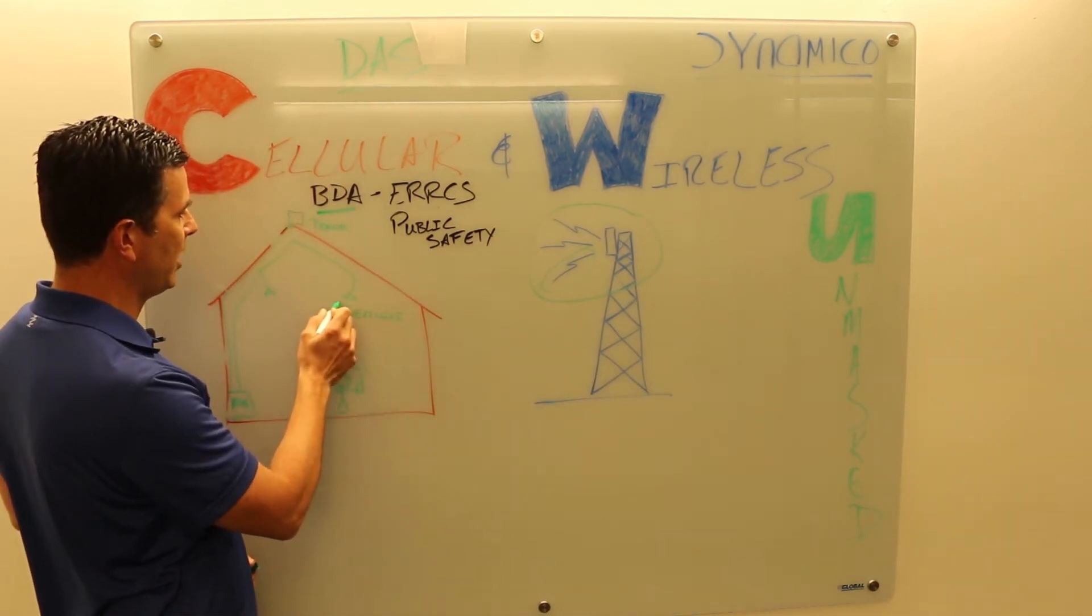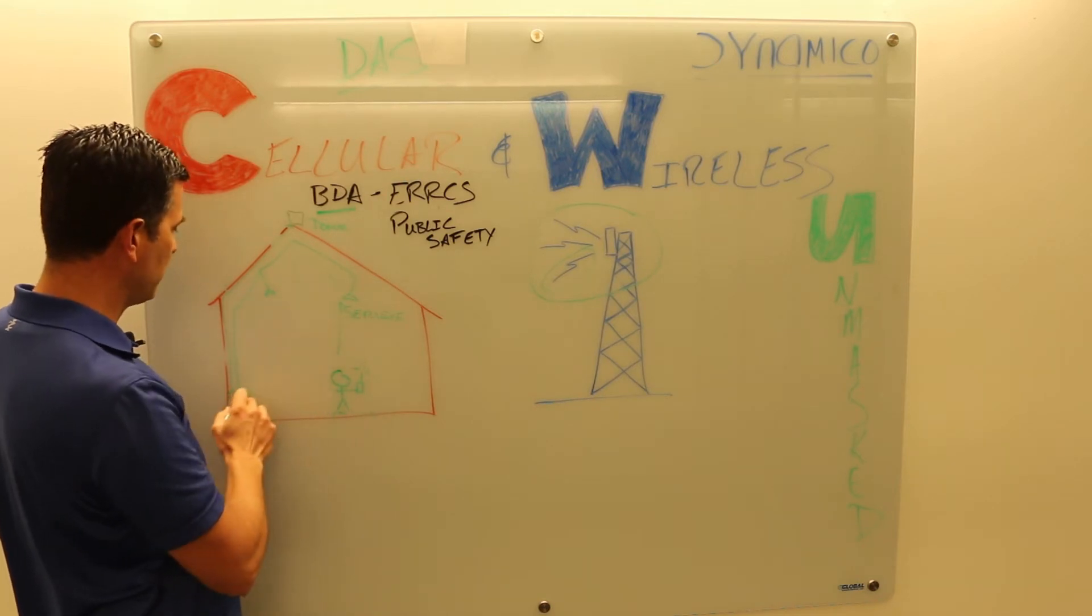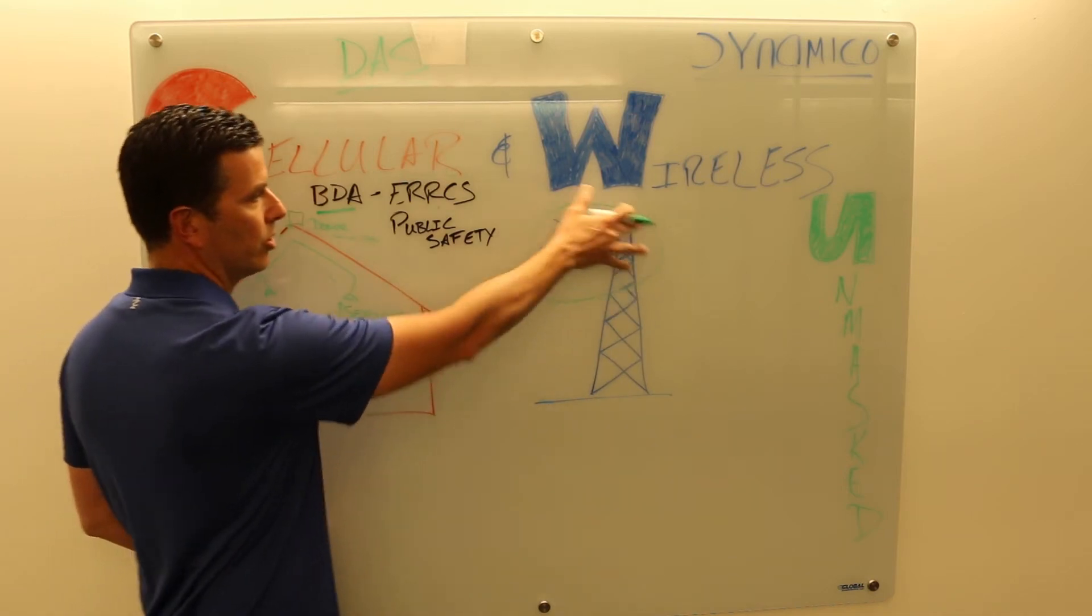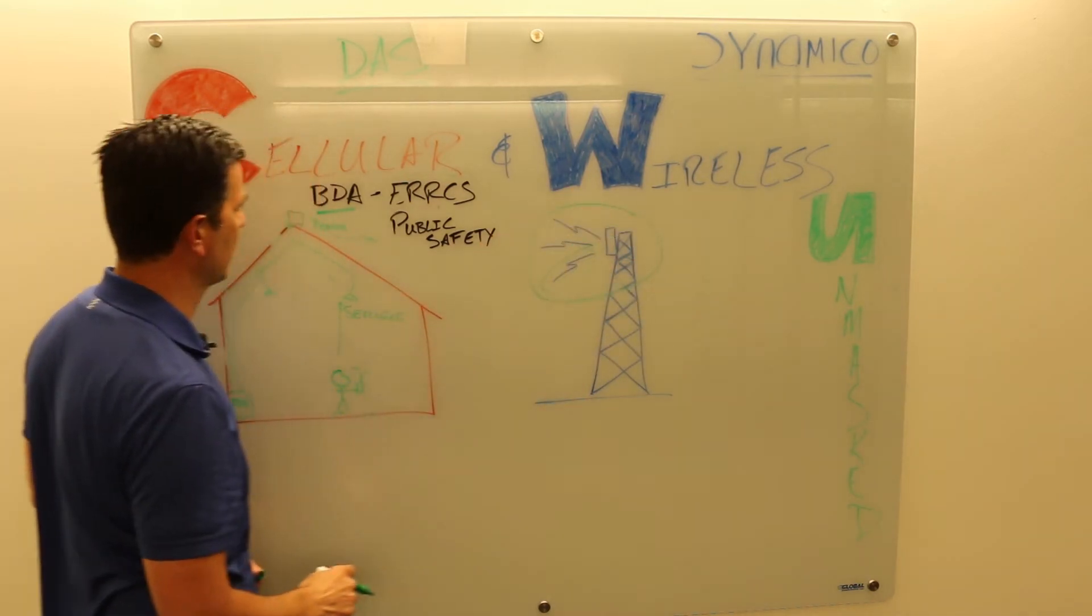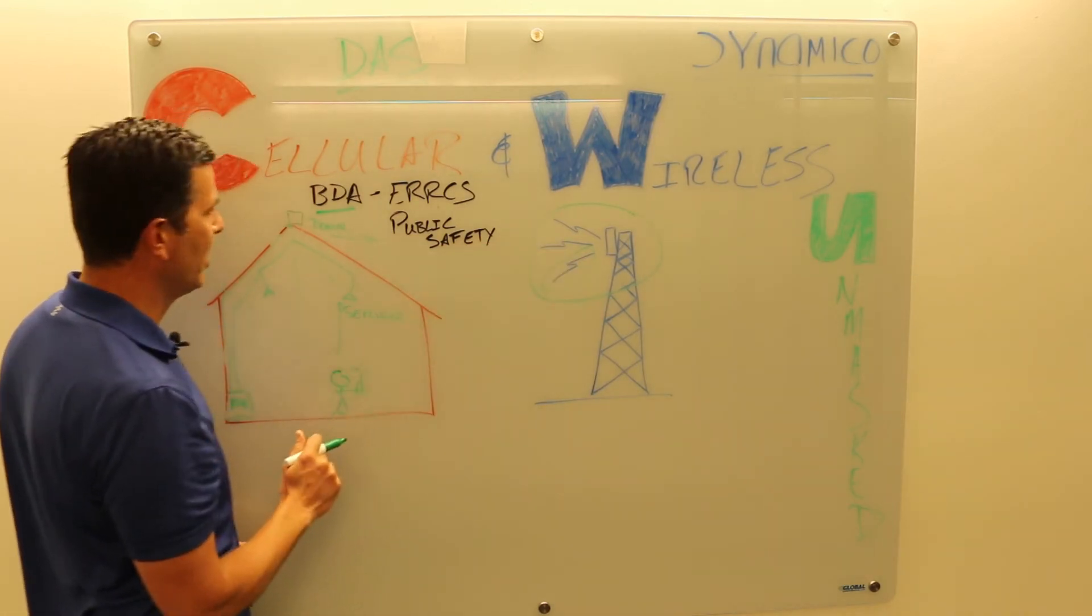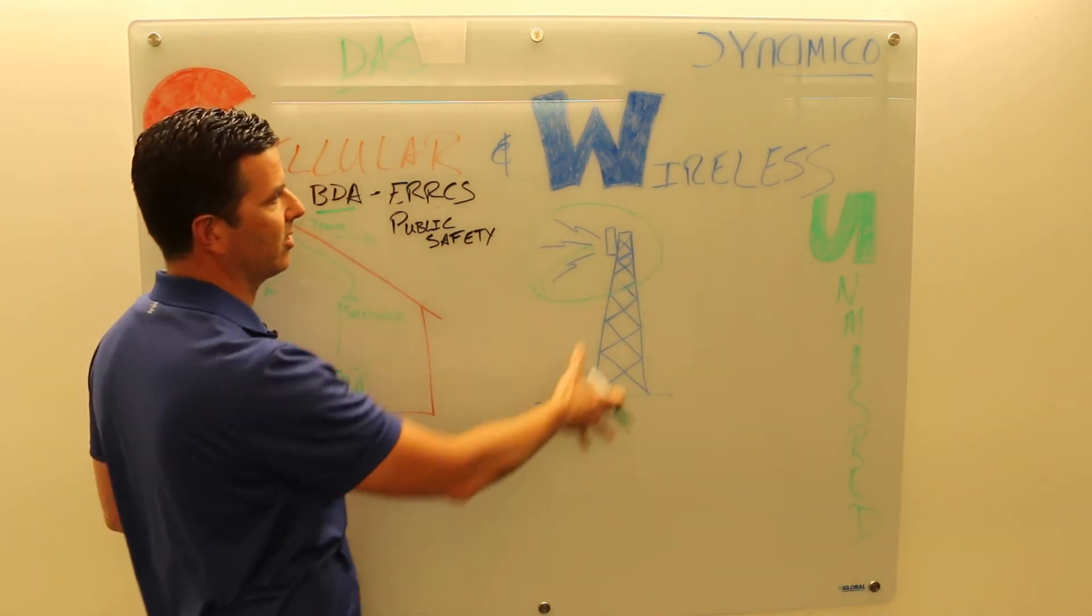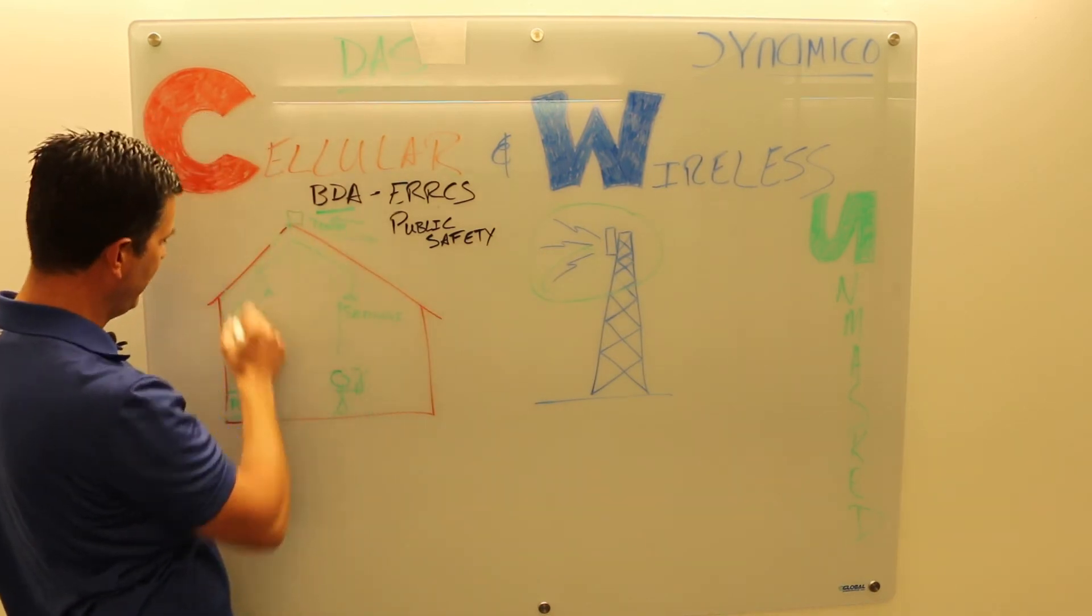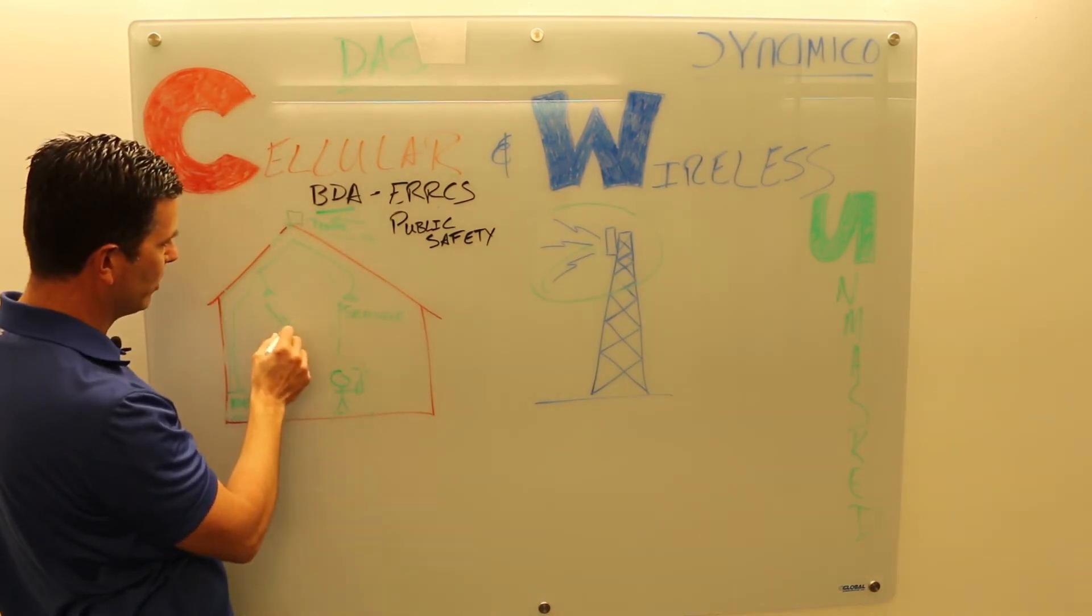It takes the signals from the user's mobile up into the service antenna through the coaxial system. The BDA then sends that signal out of the donor antenna to the local cell site. This is your donor, this is a donor antenna, the cell site's the donor. It also takes the cell site signals from the tower into the donor antenna down through the BDA and then out to the user's mobile.